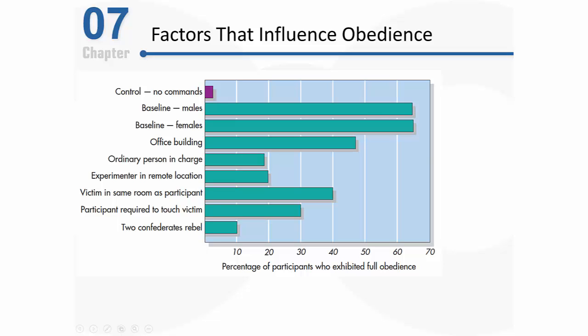Looking at a graph of Milgram's variations, we can identify several factors that systematically influenced obedience rates. First, in a control condition where participants received no commands or prompts, very few were fully obedient all the way to 450 volts — just about three percent. Also important: in Milgram's baseline study, there were no differences between males and females — they were equally obedient.